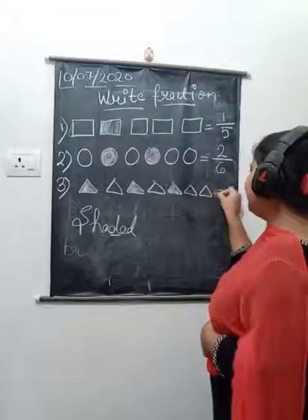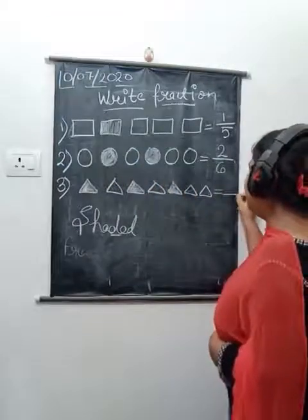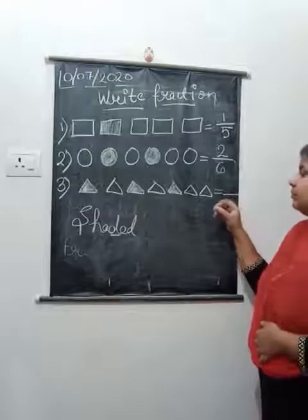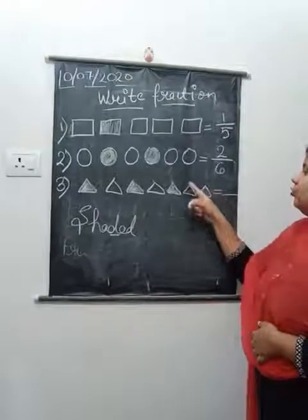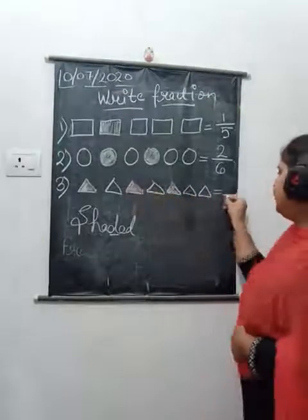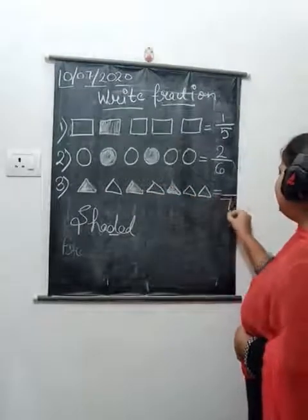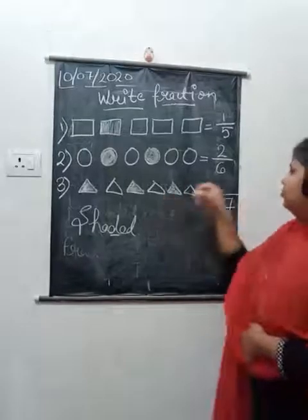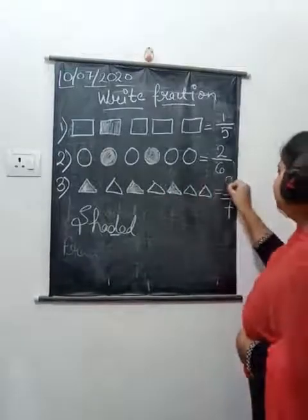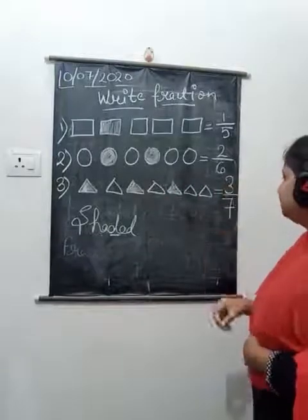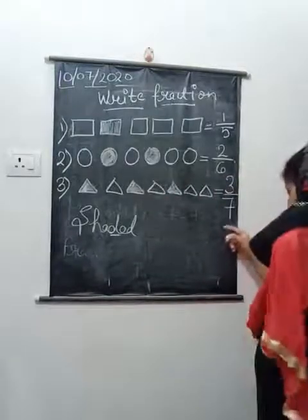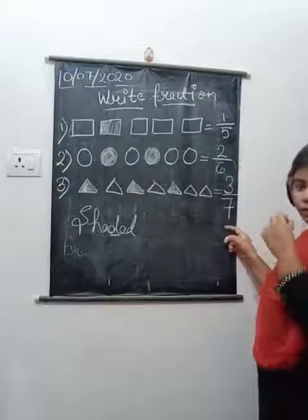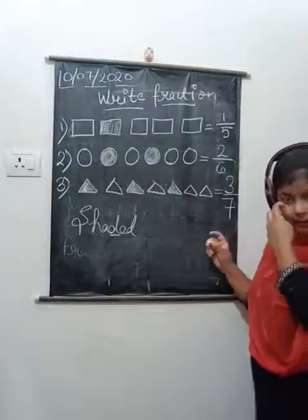Now here: one, two, three - three parts are shaded. And total parts are one, two, three, four, five, six, seven. So the fraction of the shaded part is three upon seven.